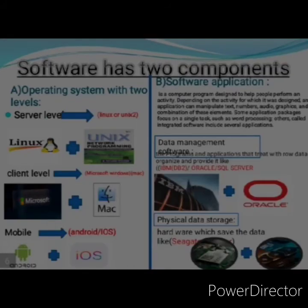Software has two components. Operating system, with two levels: server level, like Linux or Unix; and client level, such as Microsoft Windows, Mac, and for mobile, Android and iOS.